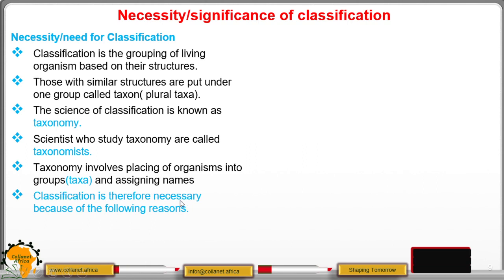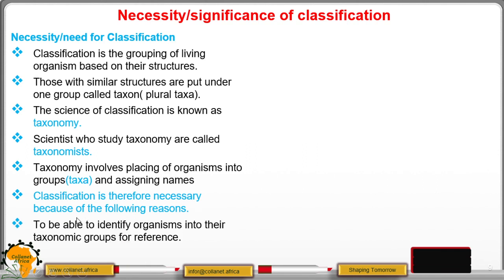Classification is important because of the following reasons. One, it enables us to identify organisms into their taxonomic groups for reference, that is, for future use.